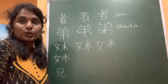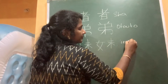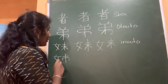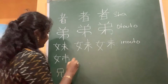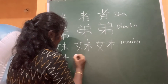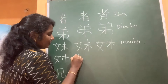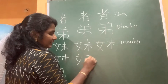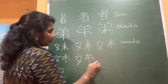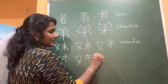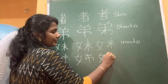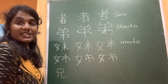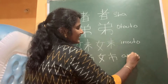This kanji means imoto, 'younger sister', written in eight strokes: one, two, three, four, five, six, seven, and eight. And this is the kanji which means ane, 'my elder sister', also eight strokes: one, two, three, four, five, six, seven, eight.